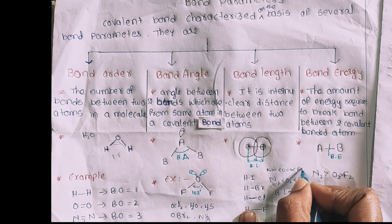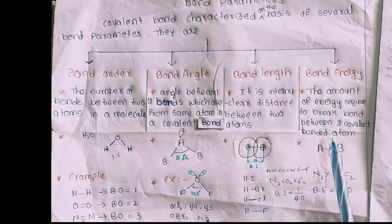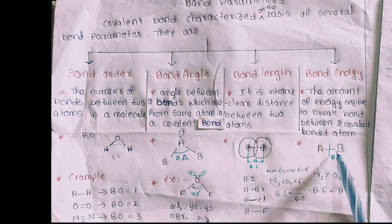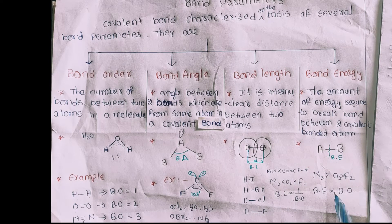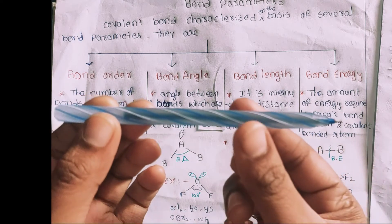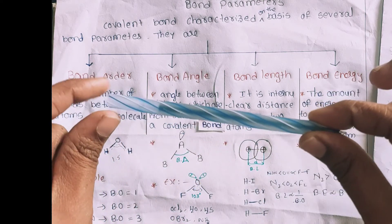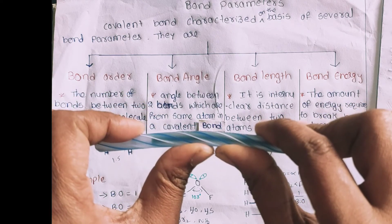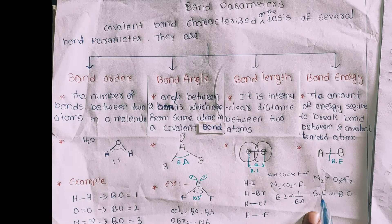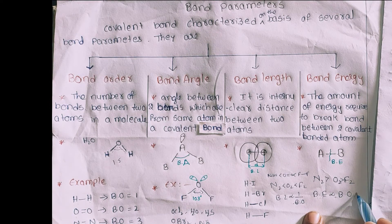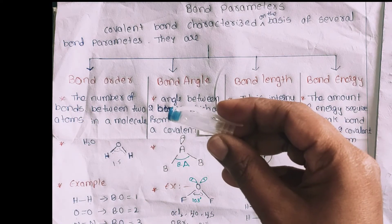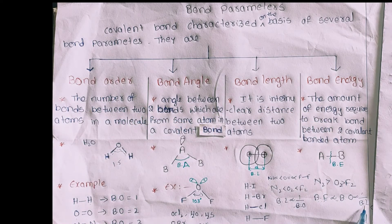Bond Energy is the amount of energy required to break the bond between two atoms in a covalent bond. When a bond is broken, this energy is called bond energy. Bond energy is directly proportional to bond order — a stronger bond requires more energy to break. However, bond energy is inversely proportional to bond length: if bond length increases, the energy is less; if bond length decreases, the energy is greater.